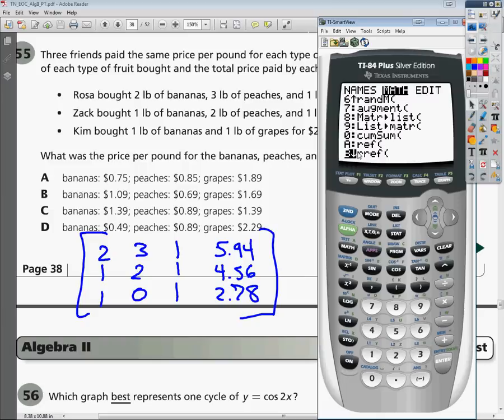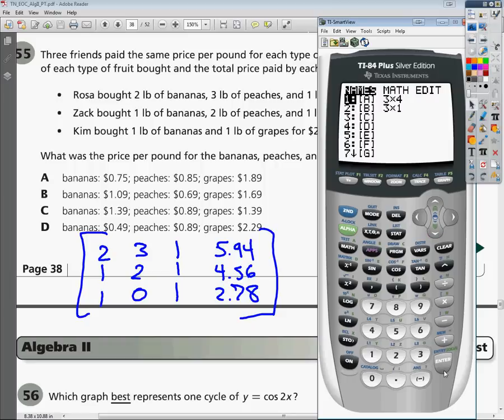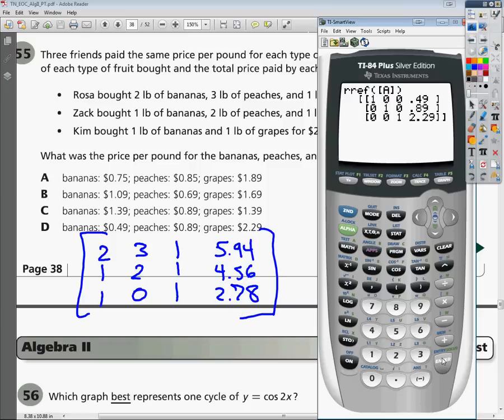This can help us figure out what they are just by using Gaussian elimination. Just remember it's two Rs, EF, right? So hit enter. And then I just need to choose my matrix. Make sure it's matrix A. You might want to close, hit enter, and it should tell us our values.